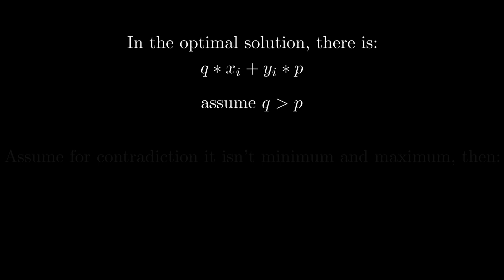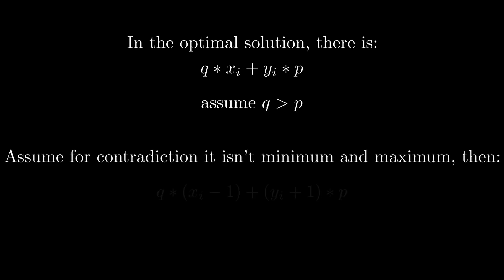Now, why is this true? Well, since this is the optimal solution, let's for contradiction say that in this optimal solution, xi is not the minimum and yi is not the maximum. Then that means that we can decrease xi, so let's decrease it by 1, and because we decrease it by 1, we need to add 1 to yi to keep the sum constant. And now we get the expression q times xi minus 1 plus yi plus 1 times p. And if you factor it out, it turns into q times xi plus yi times p, which is the previous thing we had, plus p minus q.